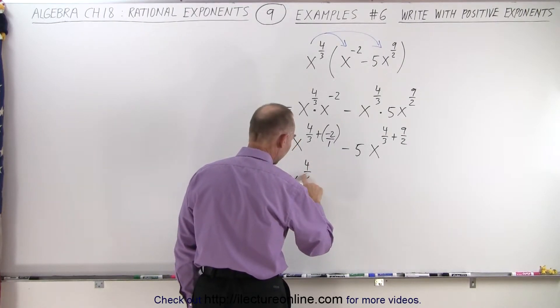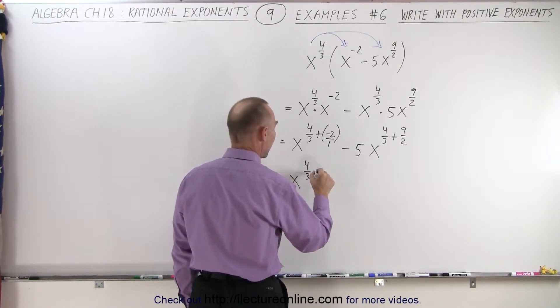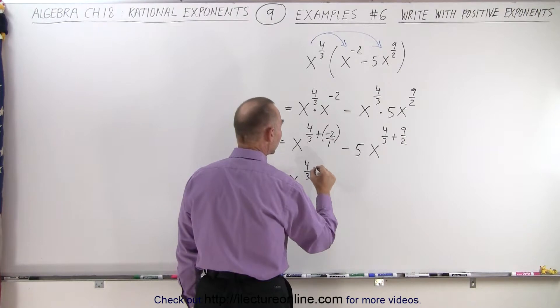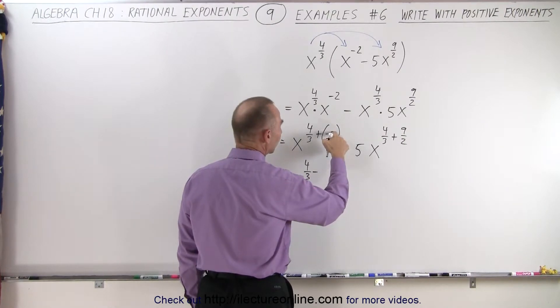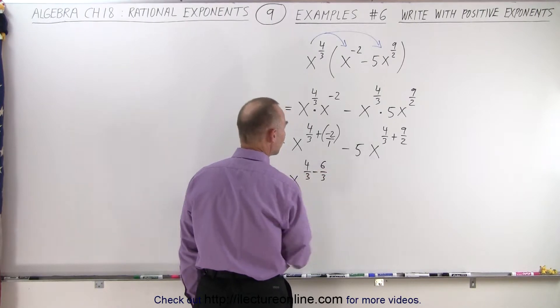4/3 like this. And then the minus here becomes minus. And 2 times 3 is 6, 1 times 3 is 3. That would be 6/3.